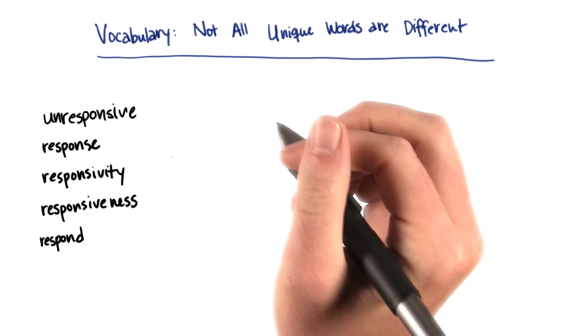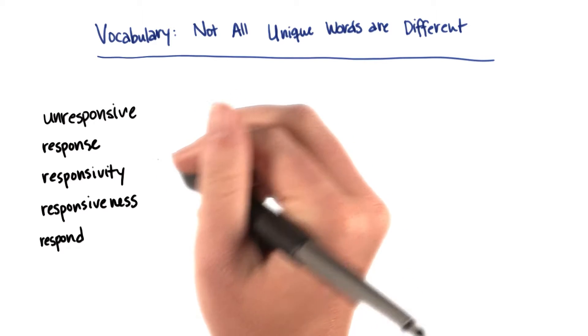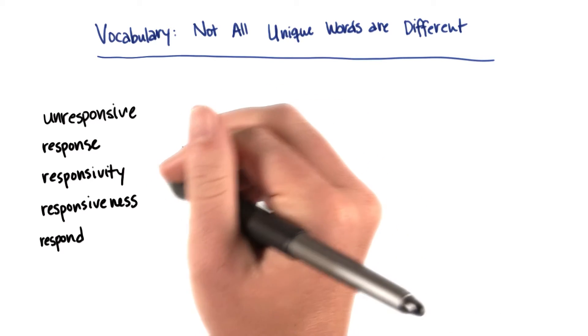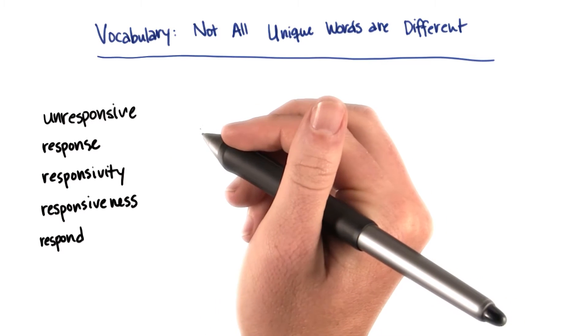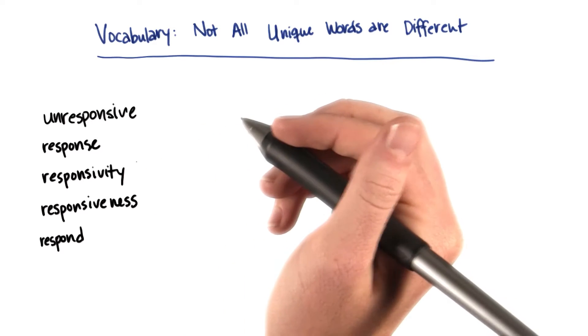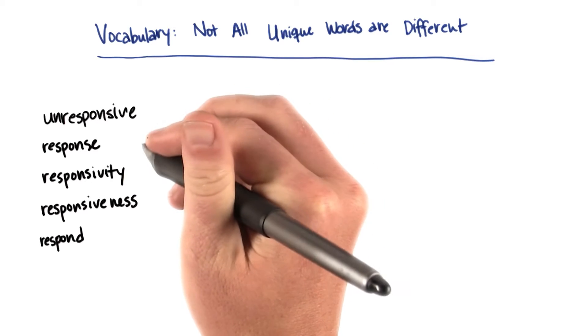Say in my corpus, I have a bunch of different versions of the word respond, where the meaning changes ever so slightly based on the context or based on the part of speech that the word is. But they're all talking about basically the same idea, the idea of someone or something responding. The idea is that if I naively put these into a bag of words,